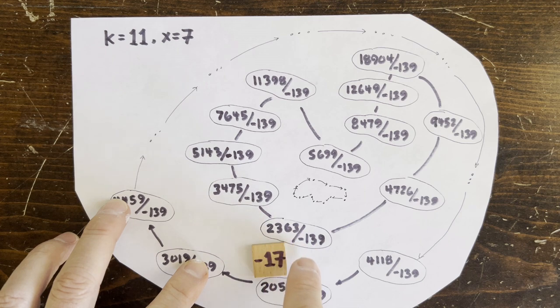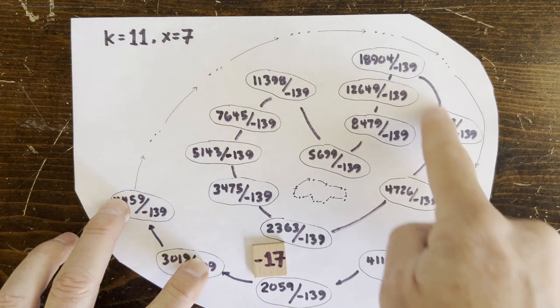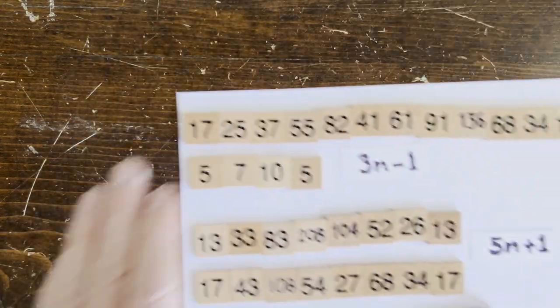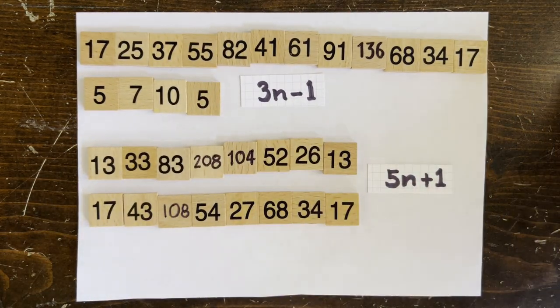23 to 23 is a multiple of 139. Actually, negative 139. This is the famous negative 17 loop, a.k.a. the 17 loop for the 3n minus 1 problem.